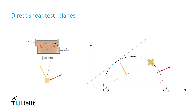When you draw a line from the correctly established pole to the principal stresses sigma 1 and sigma 3, you will find the planes where the principal stresses act perpendicular during failure. In the figure, these planes are shown by a striped red line. To find the orientation of the failure plane, the angle made with the horizontal should be established, shown on the slide as theta 1.